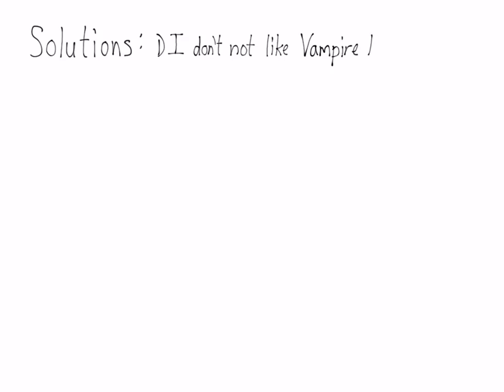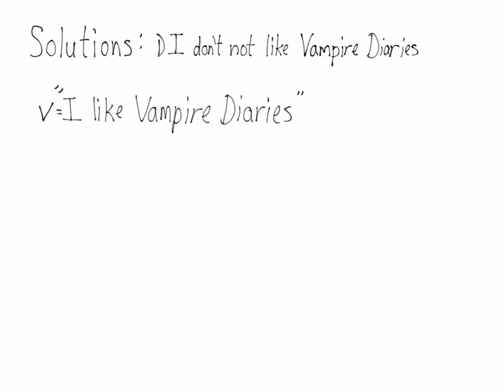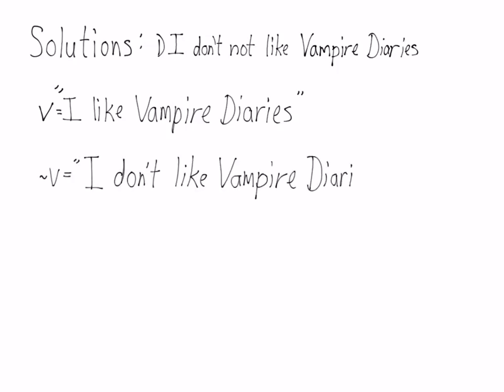Solution 1: 'I don't not like Vampire Diaries.' If you let the variable v stand for 'I like Vampire Diaries' — a simple statement that is affirmative — then the negation of v is 'I don't like Vampire Diaries,' and the double negation of v gives you the original statement.